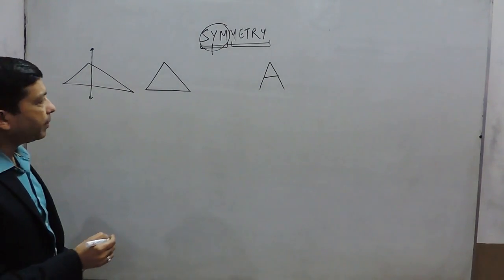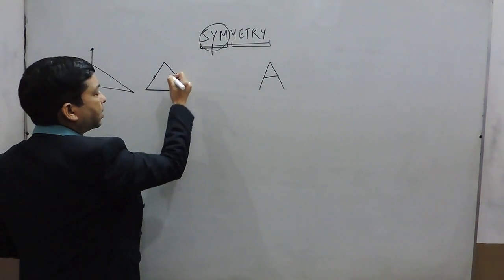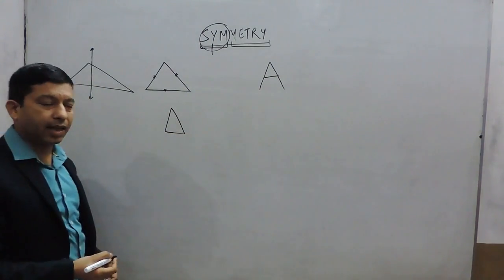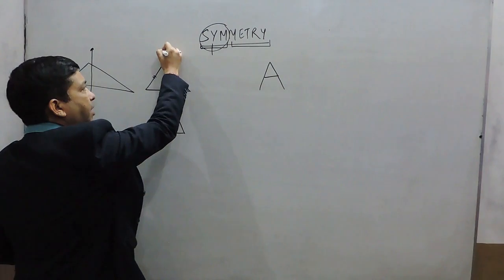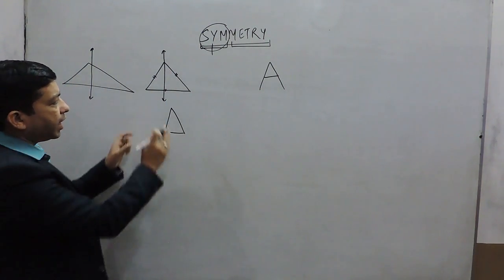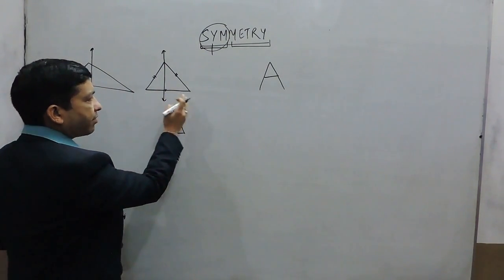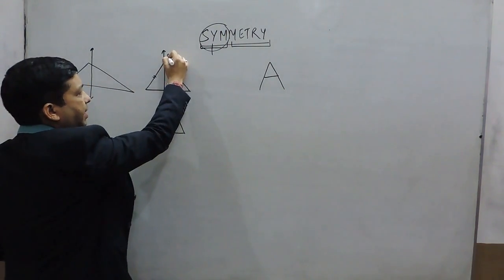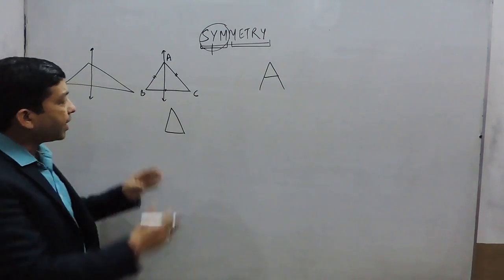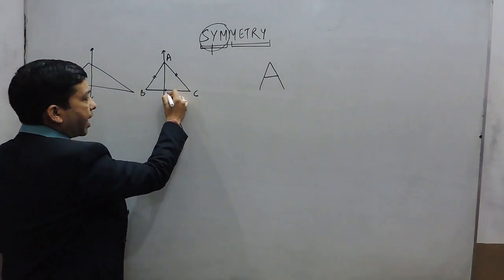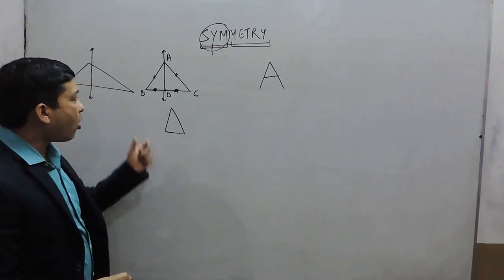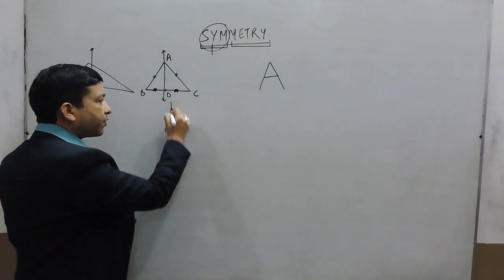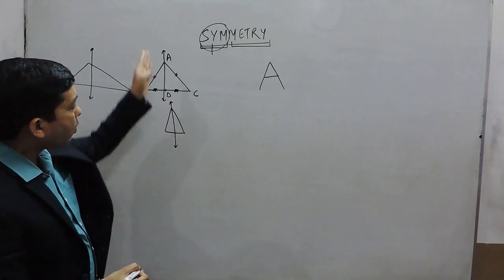So a scalene triangle does not have symmetry. While if we talk about an equilateral triangle or an isosceles triangle, if we mark a line in between, this vertical line will divide the triangle into two equal halves where the measurements of both sides are equal. If we divide it into two equal halves, the length of AB and the length of AC are the same and they are a mirror image of each other. Similarly, isosceles triangle is also symmetrical on the vertical axis.